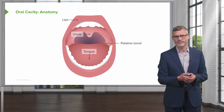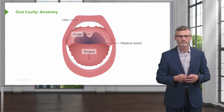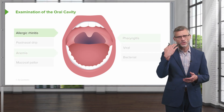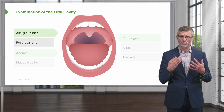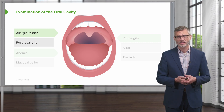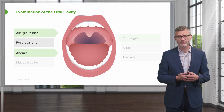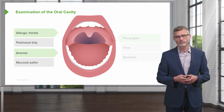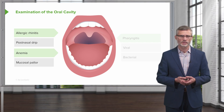Moving on to the oral cavity, we'll be looking at the hard and soft palate. We'll look in the back of the throat for signs of allergic rhinitis with post-nasal drip or cobblestoning. Anemia can also be detected by looking at the gingiva and other ancillary findings that suggest a low hemoglobin.